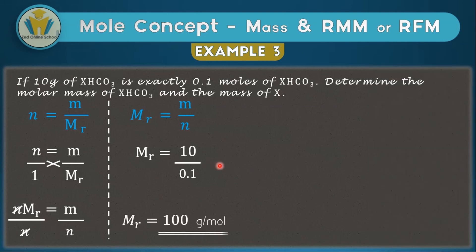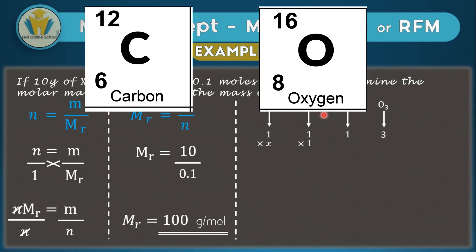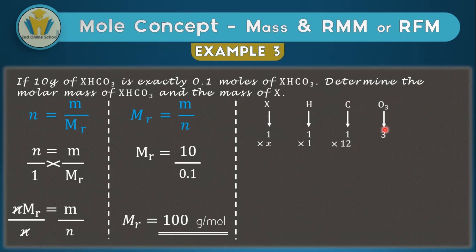The molecular mass of this compound is 100 g/mol. Now we need to find the mass of X. We write out the formula for X bicarbonate, with X as an unknown. In the bicarbonate part (HCO₃), we have one H, one C, and three O atoms. We label the atomic mass of X as x. Multiplying by atomic masses: H is 1, C is 12, and O is 16. We multiply each by its count: one C × 12 = 12, and three O × 16 = 48.